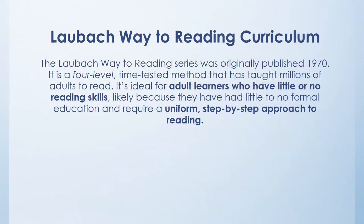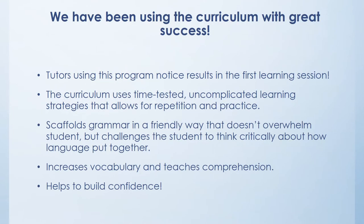The Laubach Way to Reading curriculum is the preferred literacy curriculum for Literacy Volunteers of Greater Portland. It's a series originally published in 1970 — a four-level, time-tested method that has taught millions of adults to read. It's ideal for learners with little or no reading skills who require a uniform, step-by-step approach. Tutors notice results during the first session. By the end of that first session, a student who's never been formally taught may read a whole story. The curriculum uses an uncomplicated learning strategy with repetition and practice.